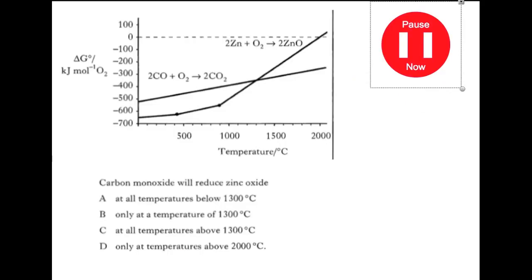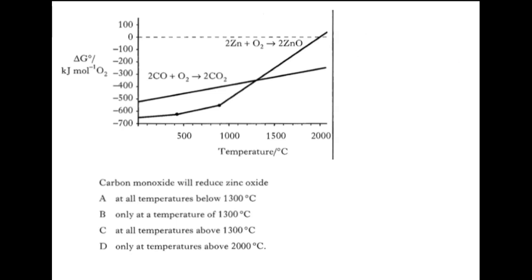Pause the video now. Here we have zinc oxide and carbon monoxide, and we're trying to work out when we can use carbon monoxide to extract zinc. We need to have our carbon monoxide line below the zinc line. So the zinc line is here and our carbon monoxide line is here, and we're going to be above the intersection point. That shows us that we would be at any temperature above 1300 degrees. So that gives us an answer of C.